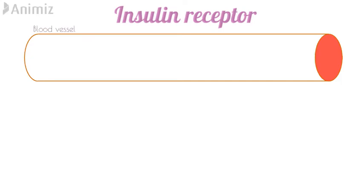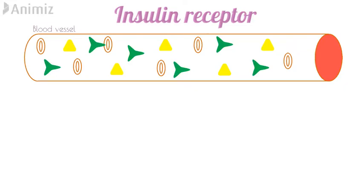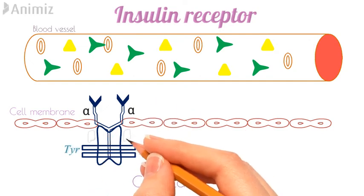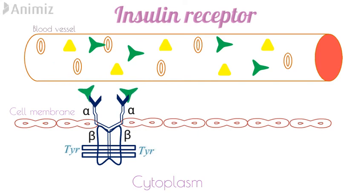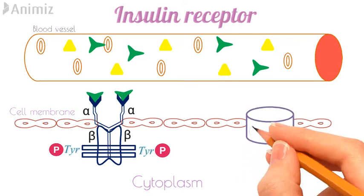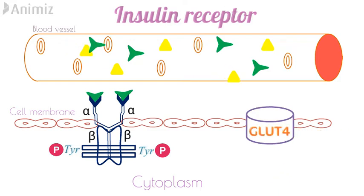Now let's see how insulin interacts with its receptor on the cell surface. In the blood we have blood cells, glucose molecules, and insulin molecules secreted by the beta cells. The insulin receptor is a tetrameric tyrosine kinase-linked receptor present on the cell surface, with two alpha units and two beta units. When an insulin molecule binds to the alpha subunit, it activates the beta unit and leads to phosphorylation of the tyrosine kinase enzyme, activating it. After a cascade of pathways, it opens up a glucose transporter channel on the cell surface known as the GLUT4 channel, through which glucose molecules enter the cell.